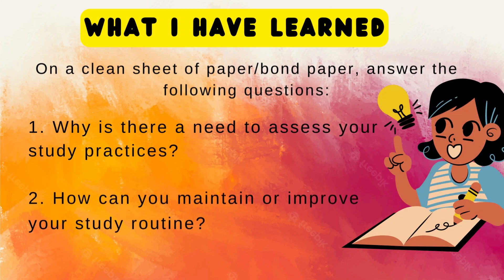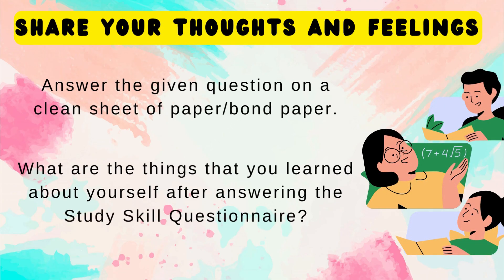What I Have Learned. Suggested Time Allotment: 5 minutes. On a clean sheet of paper or bond paper, answer the following questions: 1. Why is there a need to assess your study practices? 2. How can you maintain or improve your study routine? Share your thoughts and feelings. 3. Suggested Time Allotment: 3 minutes. Answer the given question on a clean sheet of paper or bond paper: What are the things that you learned about yourself after answering the study skills questionnaire?